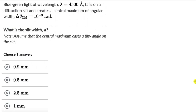Let's solve a couple of questions on slit width in single-slit diffraction. For the first one, we have blue-green light of wavelength 4500 angstroms which falls on a diffraction slit and creates a central maximum of angular width delta-theta = 10⁻³ radians. The question is to find the slit width, assuming the central maximum casts a tiny angle. Pause the video and try this question on your own first.